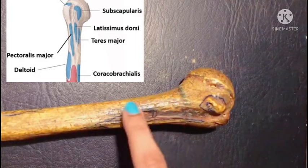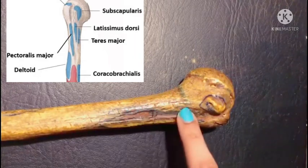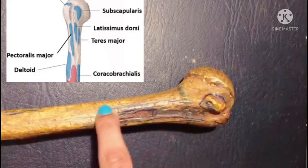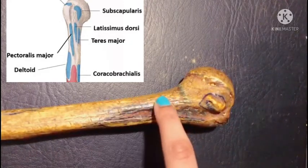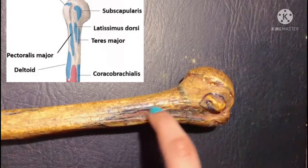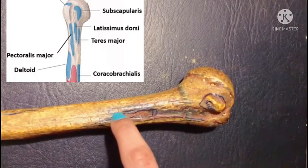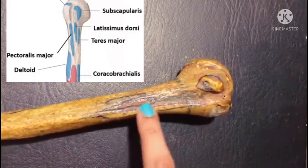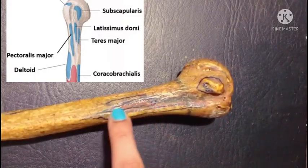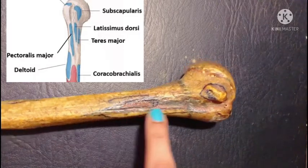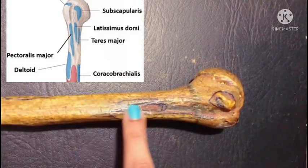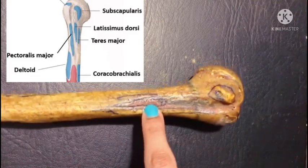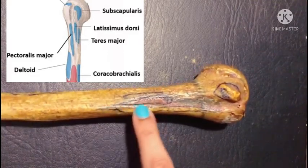Going downwards, T, L, and P correspond to the lips of the intertubercular sulcus. The medial lip gives insertion to T, which is teres major. The floor of the sulcus gives insertion to L, which is latissimus dorsi. Finally, the lateral lip of the intertubercular sulcus gives insertion to P, the pectoralis major, via a bi-laminar tendon.